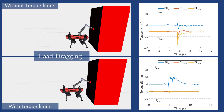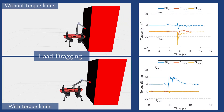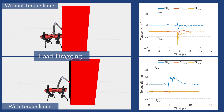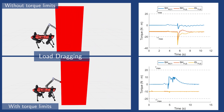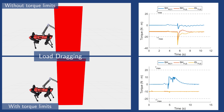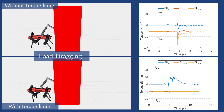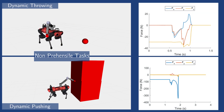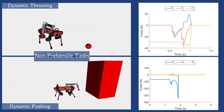In this next class of experiments, we perform a variety of whole-body manipulation tasks. The first one involves the robot dragging a 10-kilogram load without arm torque limits. In the constrained case, it is clear how the arm approaches a singularity to apply the required pulling force. Thanks to the way we formulate the manipulation problem, we are also able to tackle non-prehensile manipulation tasks, such as throwing an object or dynamically pushing a heavy load.